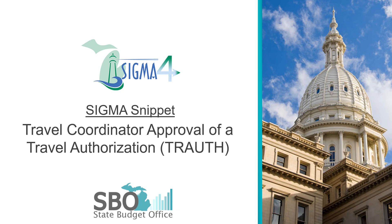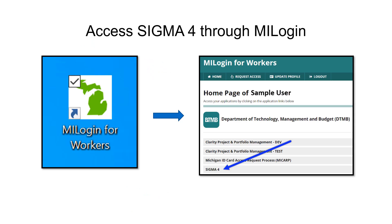Welcome to a brief introduction on travel coordinator approval of a travel authorization, or trough, in SGMA 4. You will notice several improvements as we move through approving a trough. Just as it is currently, SGMA will be available via my login. A helpful change with the upgrade is that most SGMA applications will be available through one unified link.